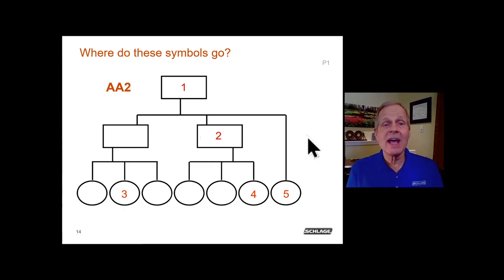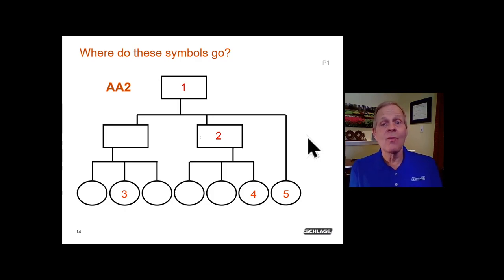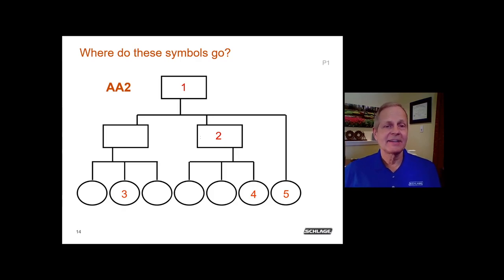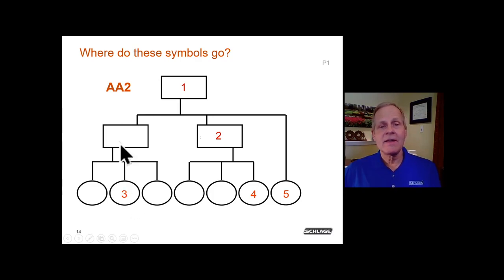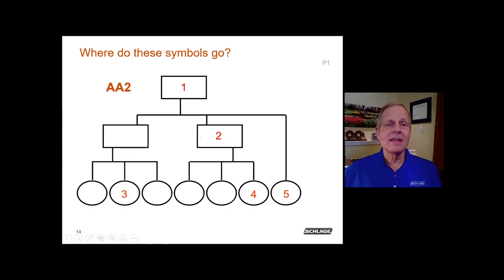Next, the symbol AA2 — a pair of letters followed by a number — indicates a change key. It would go in the change key area, as the second change key under the AA master. So AA1 would be the first, and AA2 would be the second change key under that master.